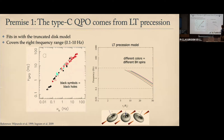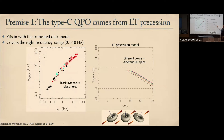If you take this truncated disk picture with the hot thick flow as the precessing object, you can work out the precession frequency as a function of that flow's size. As the hot thick flow gets smaller and smaller, the precession frequency goes up. A naive model gives a range of roughly 0.1 Hz to 10 Hz — not strongly dependent on spin — which matches the observed QPO frequency evolution across the outburst.